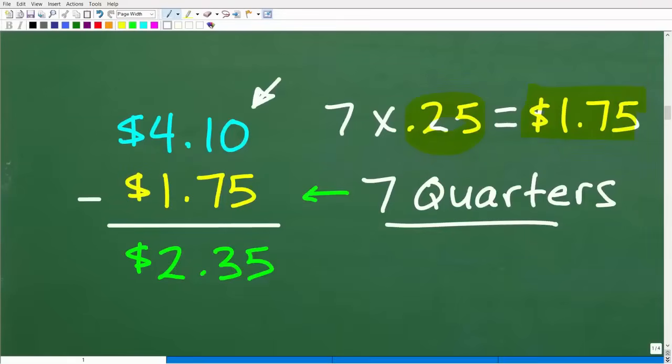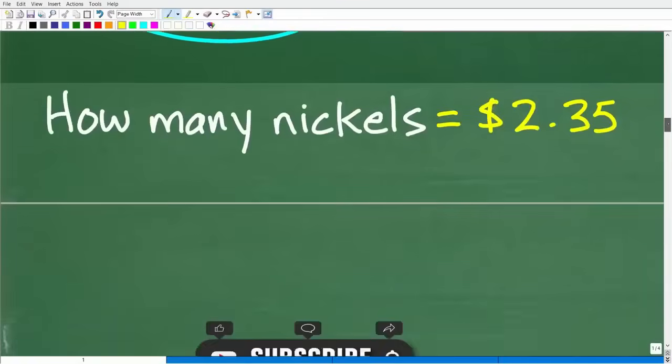So now we can take that $1.75 and subtract it away from the $4.10. And what is left is $2.35. So that is what remains. And there is no pennies and there is no dime. So this must be the total value of the nickels. So the question is, how many nickels does Ted have? This is not going to be that difficult. Let's go ahead and finish this problem up by taking the next step, which is figuring out how many nickels we have, how many nickels is worth $2.35.